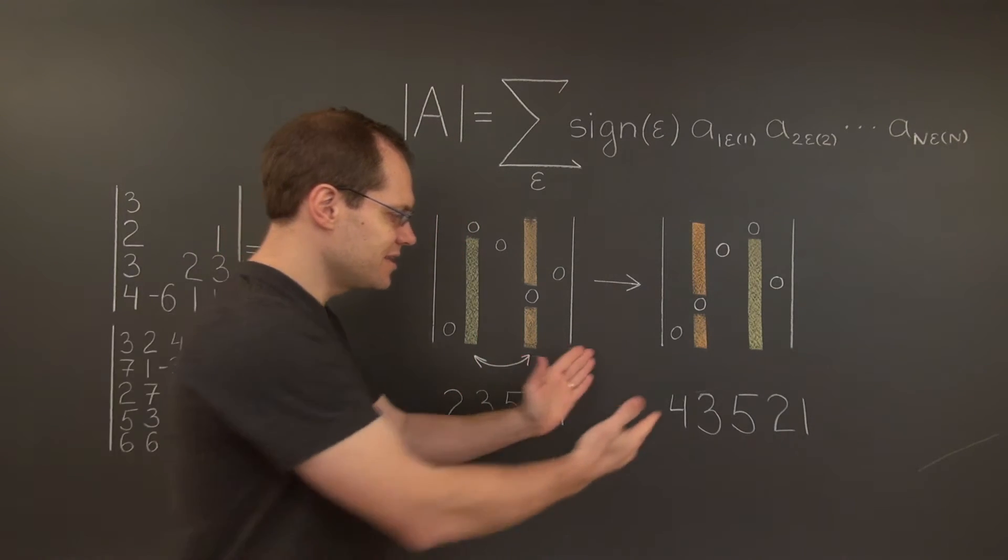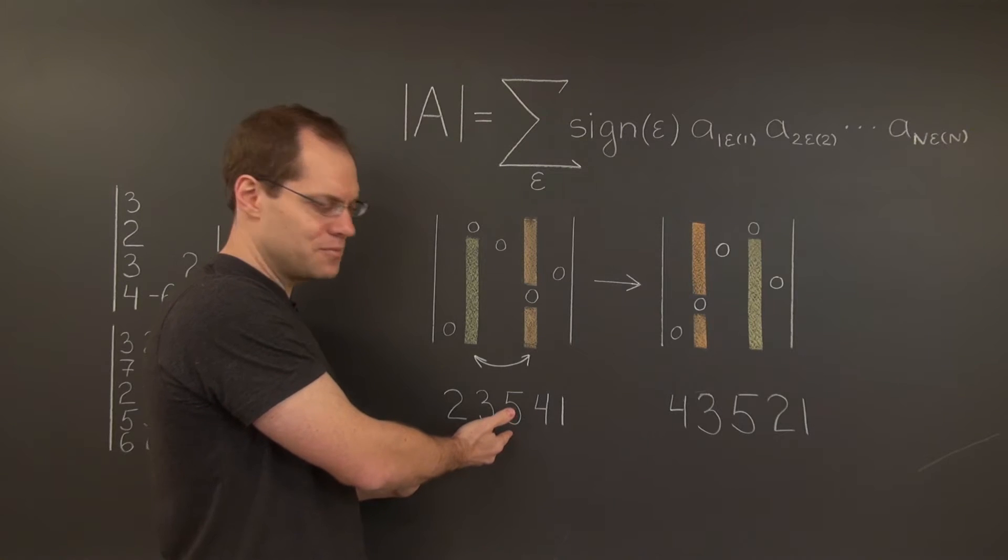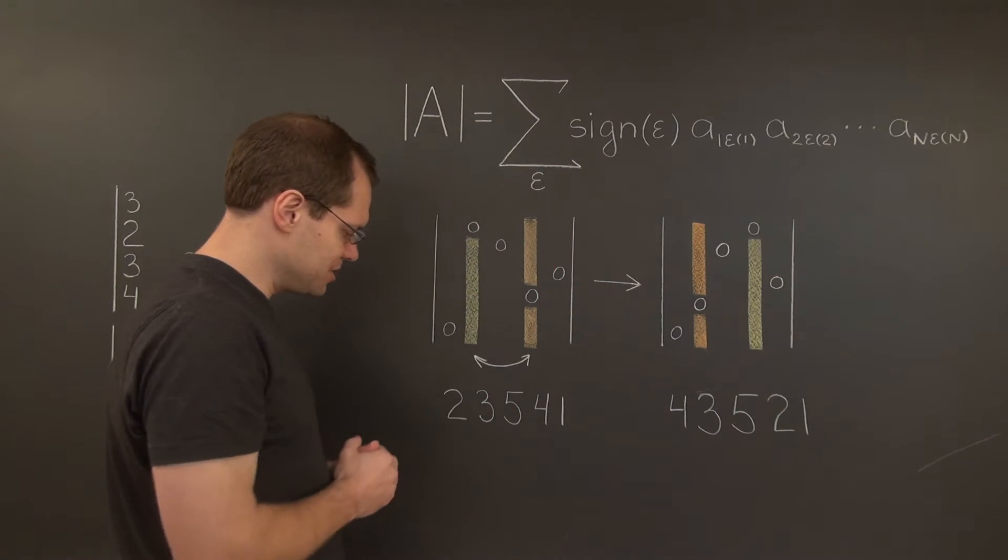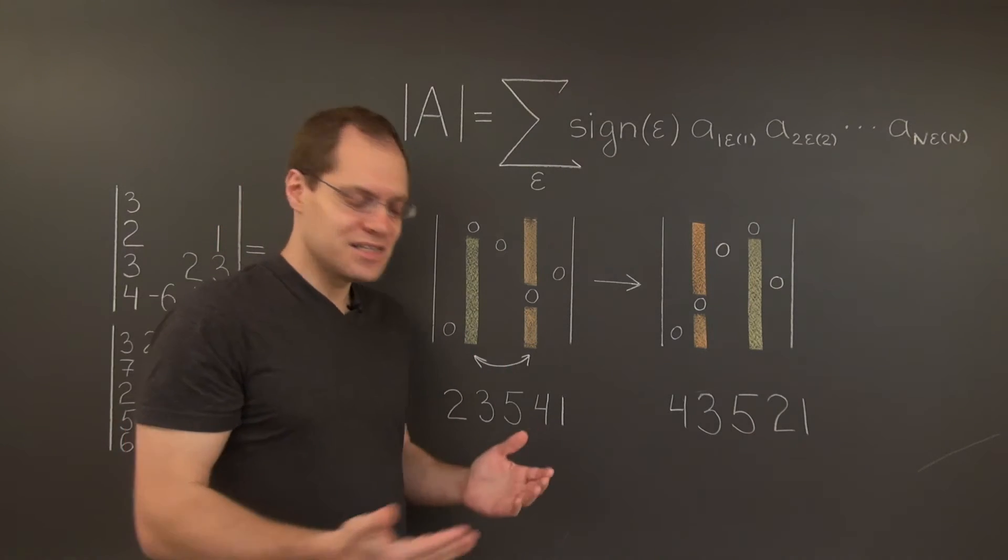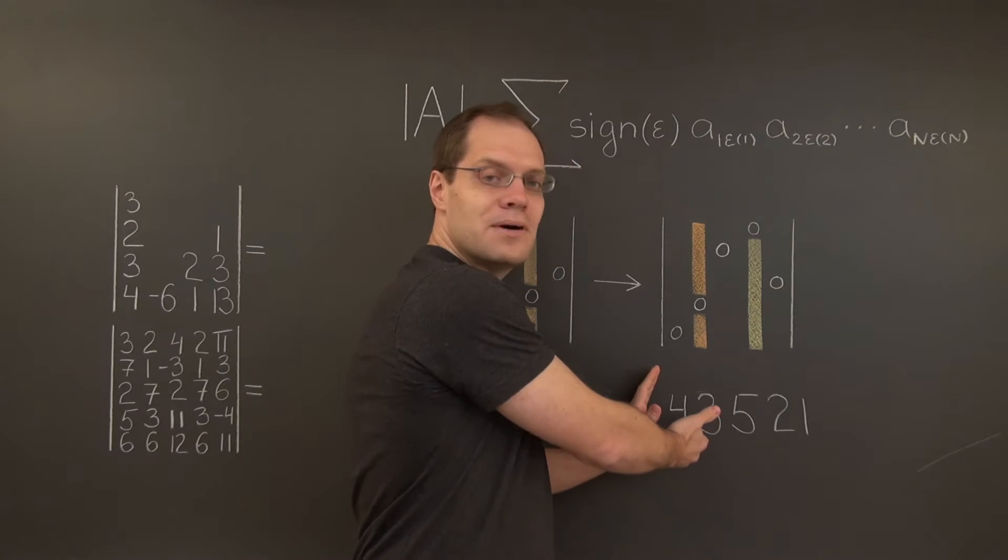That means that this permutation is exactly one switch away from this one. If you switch the 2 and the 4 back, you'll have this permutation. So if this permutation is odd, which it is, this one must be even.